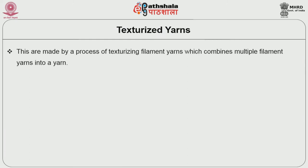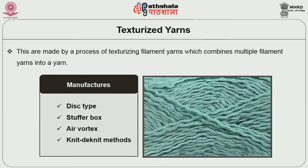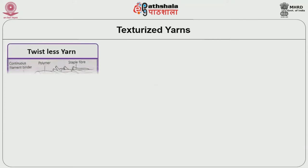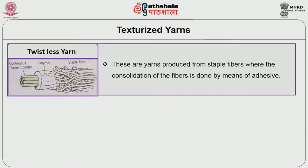Next is multifilament yarn, consisting of many filaments with or without twist and with varying thicknesses. Under multifilament yarn, texturized yarns are manufactured through the process of texturization. It is essentially used for filament yarns which combines multiple filament yarns into a yarn with some characteristics of spun yarns. It is manufactured through disc method, stuffer box method, air vortex method, knit method, and many other methods. Textured yarns are mainly used for creating bulkiness, more absorption, more softness, and more loopy structure. Apart from filament yarn, there are other types such as twistless yarns, also called ICS yarns — produced from staple fibers where consolidation is done by means of adhesive. The core is essentially a filament yarn surfaced with an adhesive and covered by staple fibers.